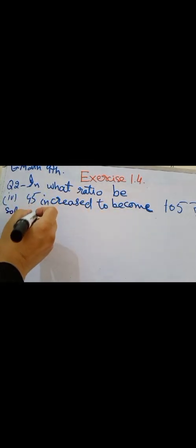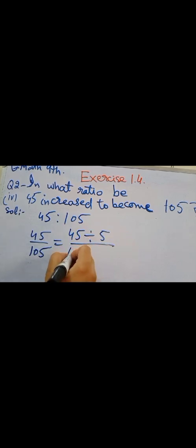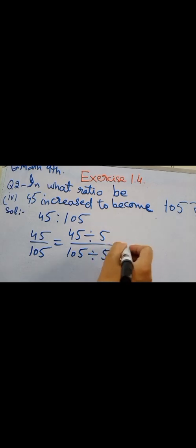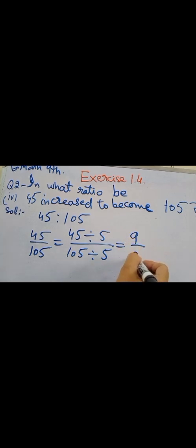Fourth part of question number 2: 45 increased to become 105. This is the ratio between 45 and 105. We solve it as 105 ratio 45, dividing by 5 for both numbers. We can write it in either form — it is up to you. We get 9 over 21.